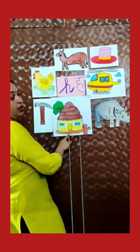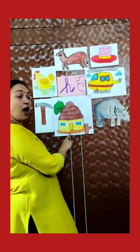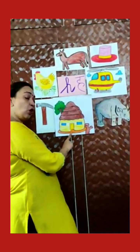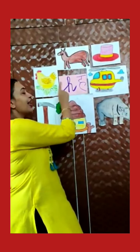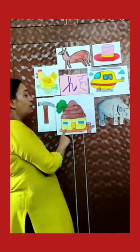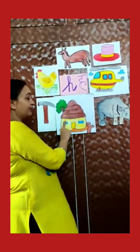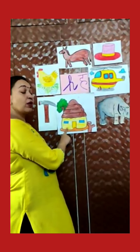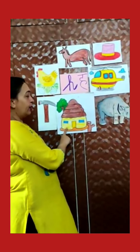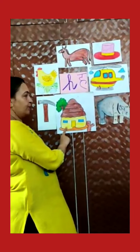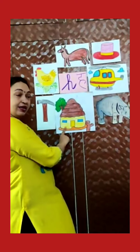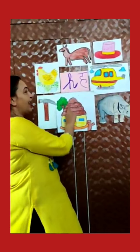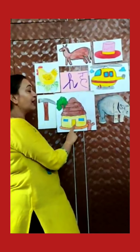H for hut. Hut is like a house. House is also a word with letter H. But a hut is made with dry leaves, mud, and wood. Generally we see the hut in a village. H for hut.